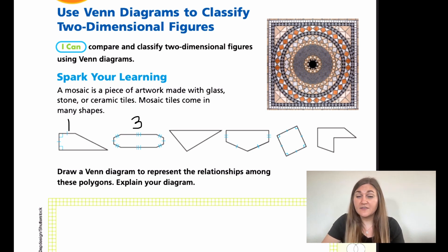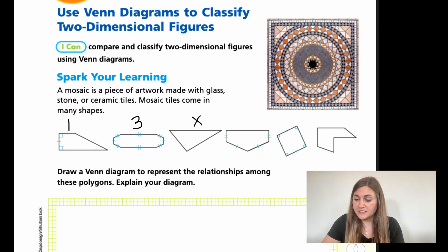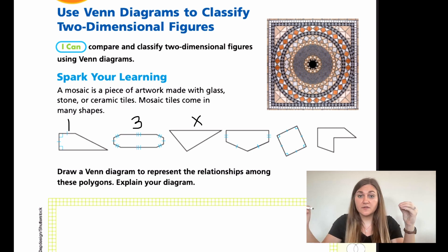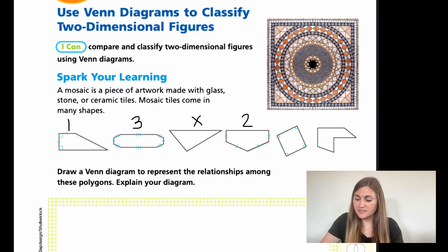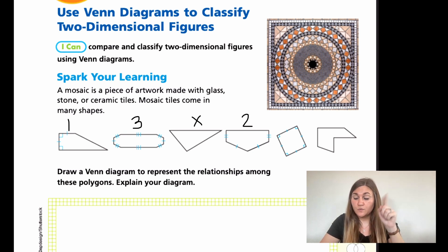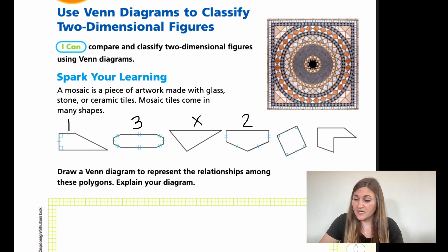This one doesn't have any of those marks, which means there aren't any matching lengths. This one has two on the bottom and two on the side, so this one has two matching lengths. This one — the square — has one, one, one, and one, which means all of the sides are matching. And then this one has none.